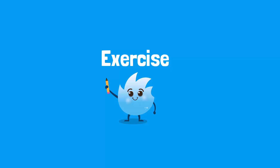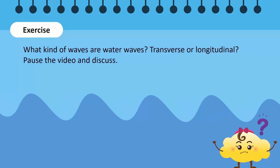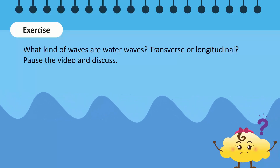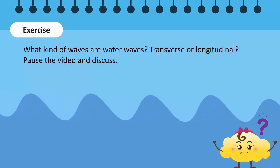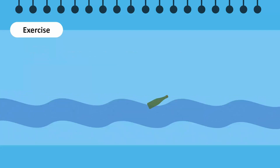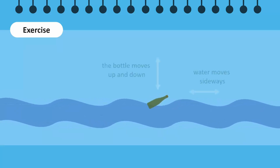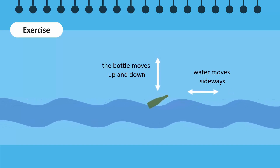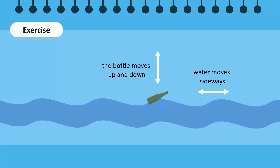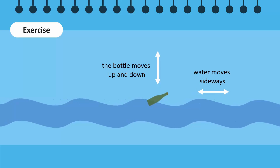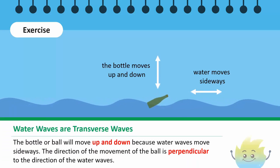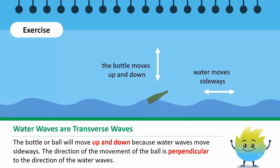Let's do a quick exercise. If we drop an empty bottle or a plastic ball into a pool of water, it will float on the surface. The bottle or ball will move up and down because the water waves move sideways. The direction of the movement of the bottle or ball is perpendicular to the direction of the water waves. Thus, water waves are transverse waves.